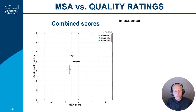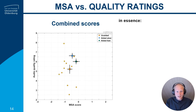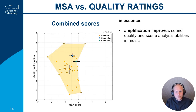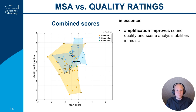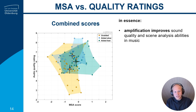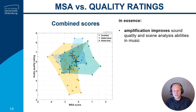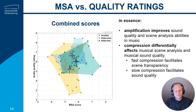Looking at a combined view, ratings are plotted on the Y-axis and MSA scores on the X-axis. In the unaided condition, both sound quality ratings and MSA abilities are lower, so we see an effect of amplification itself. The difference is that for musical sound quality it is the slow compression that exhibited the best ratings, while for musical scene analysis it was the fast compression approach. Thus, compression differentially affects musical scene analysis and musical sound quality.